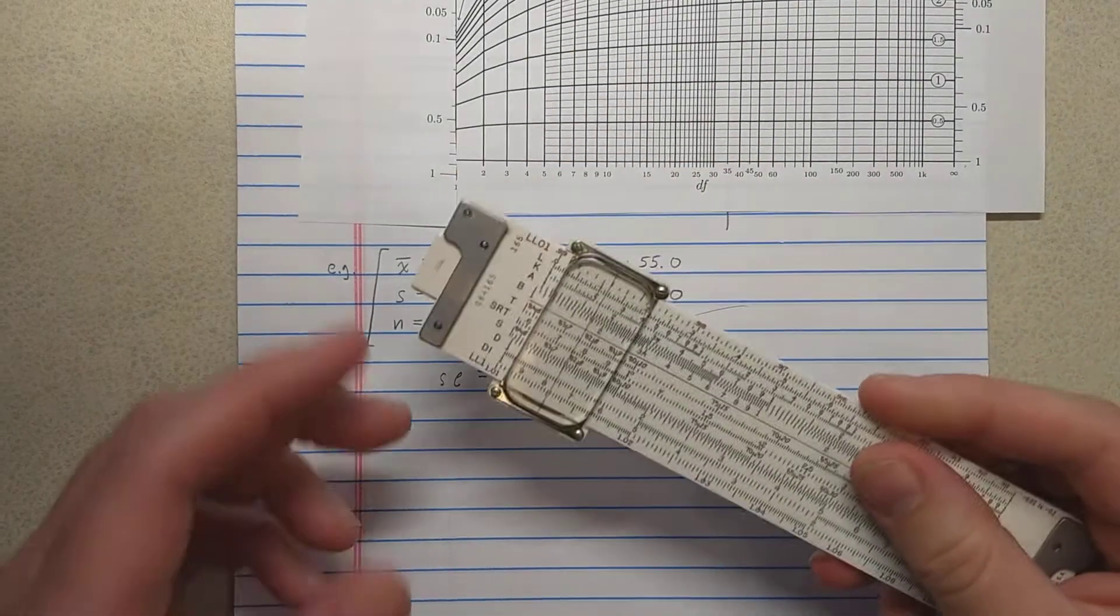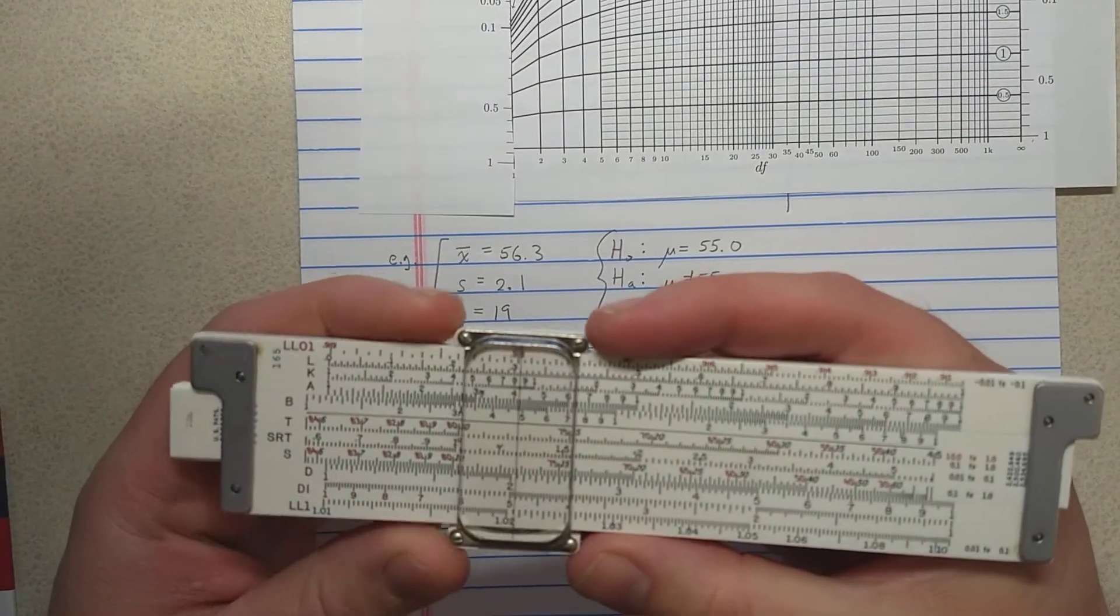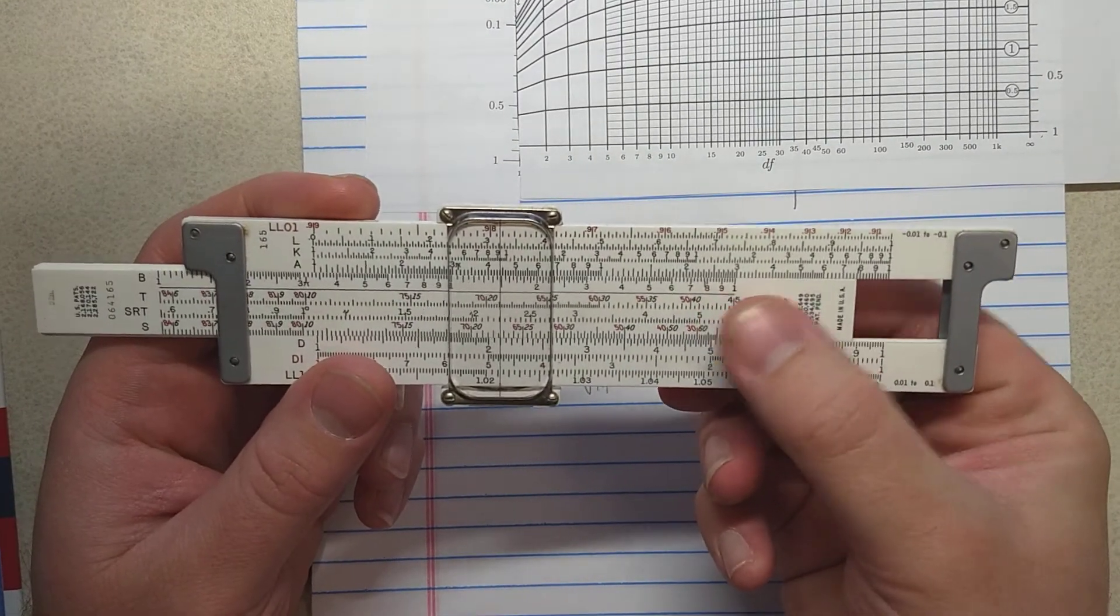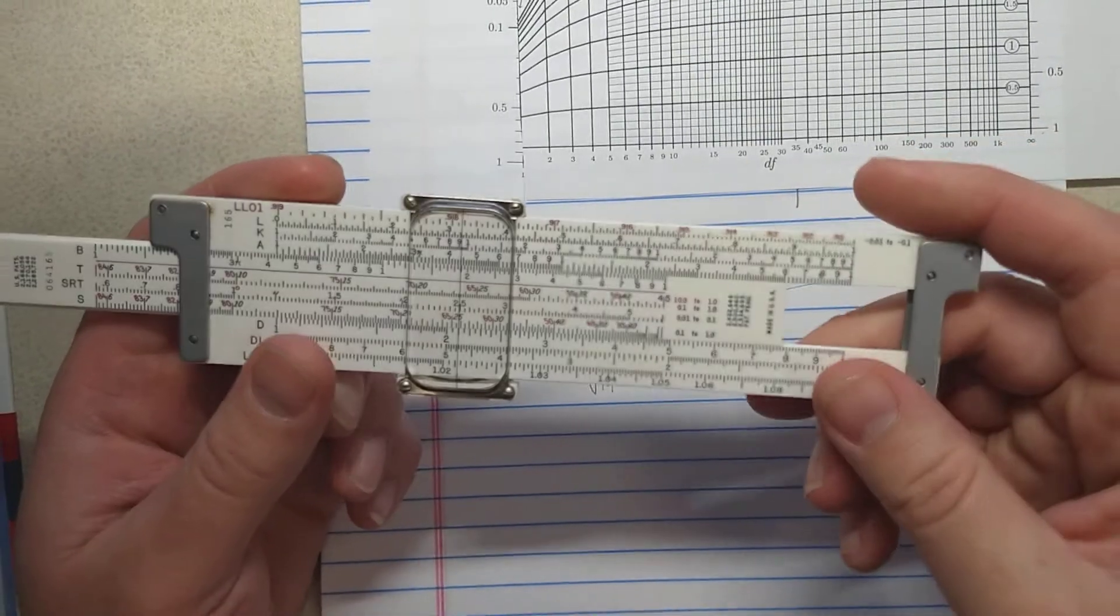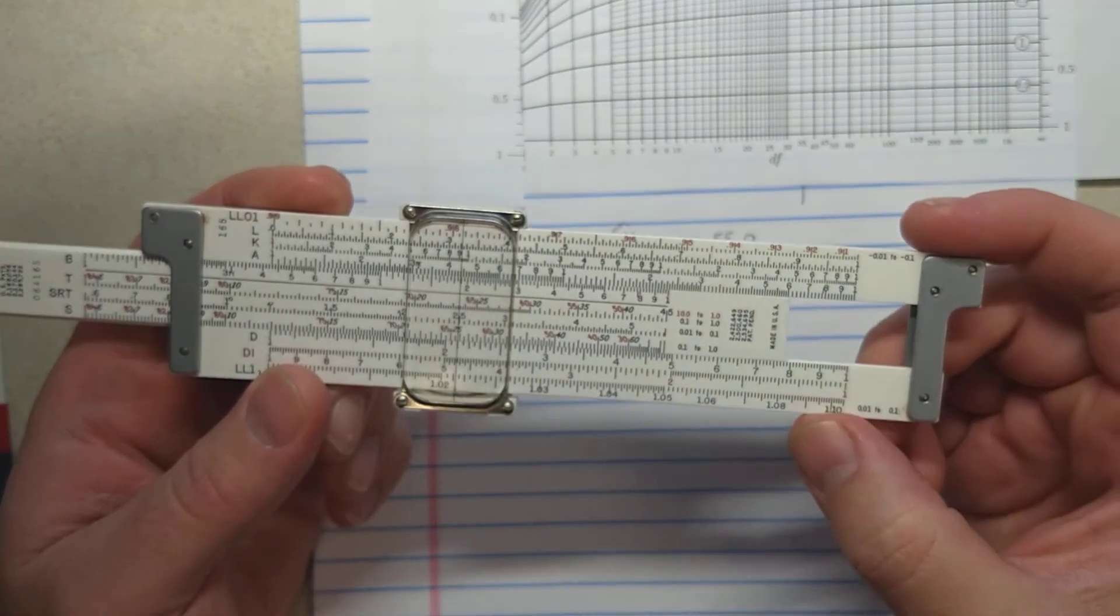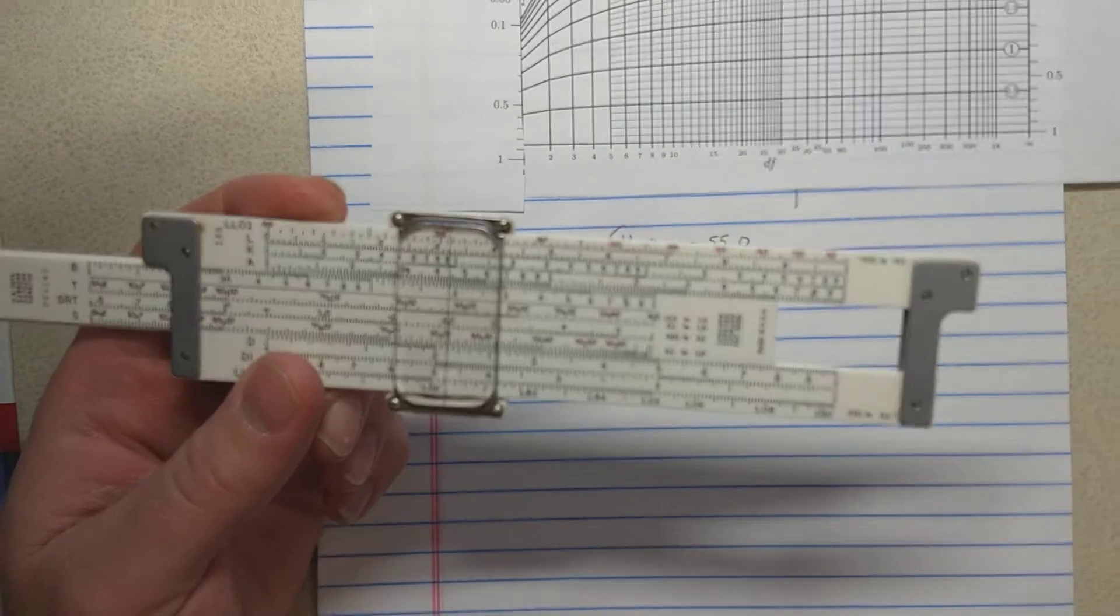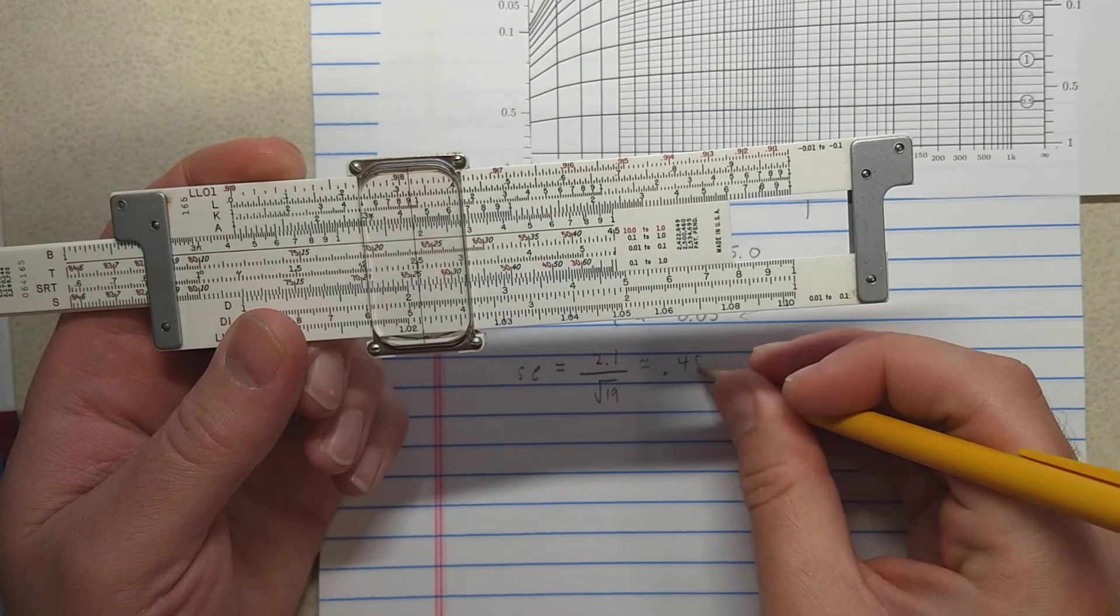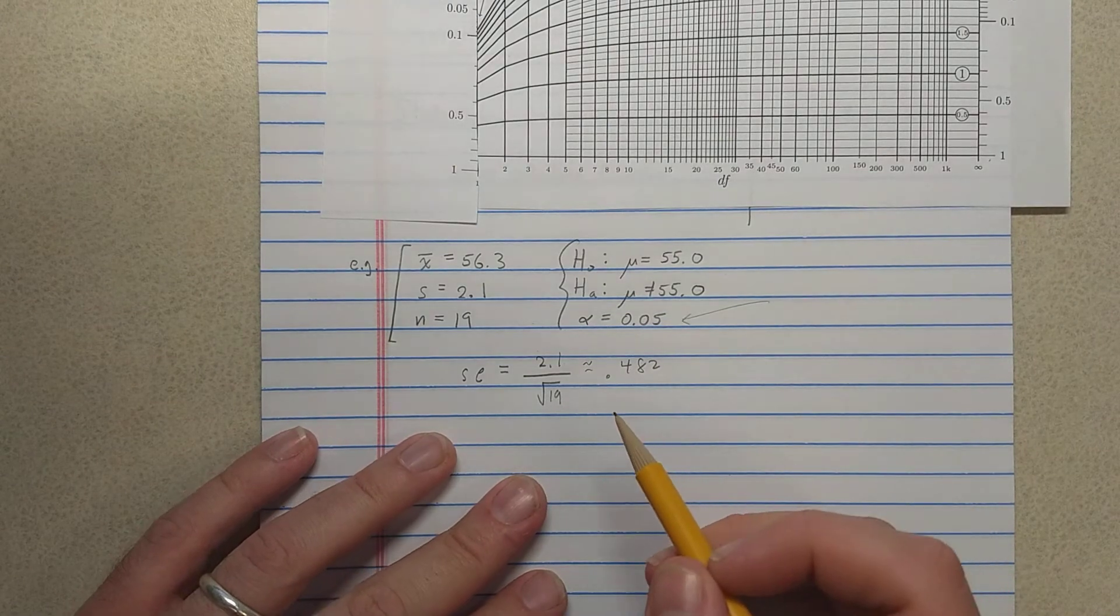So that would be 2.1 over square root 19. And since this is the slide rule channel, let's get the slide rule on this. So 2.1 here, I'm going to use B to get the square root 19. And the result down here on D looks like 4.82. Let's read that as 4.82, so actually 0.482. That's my standard error.